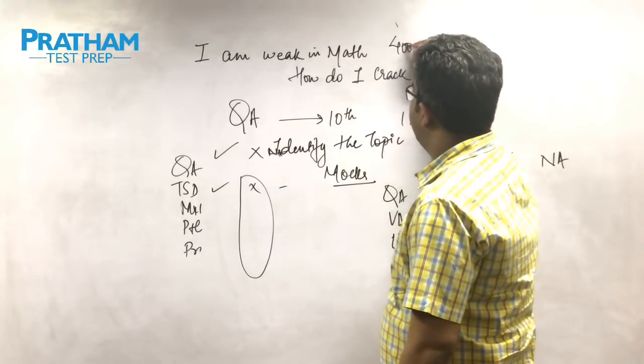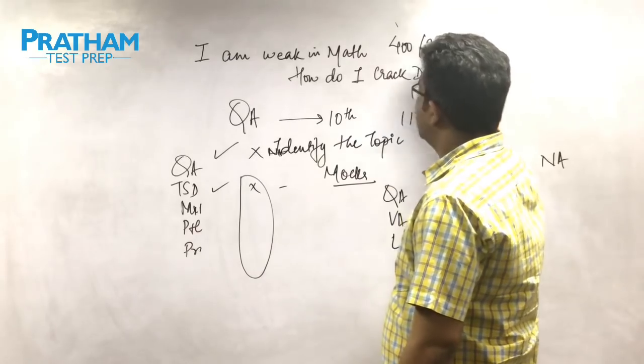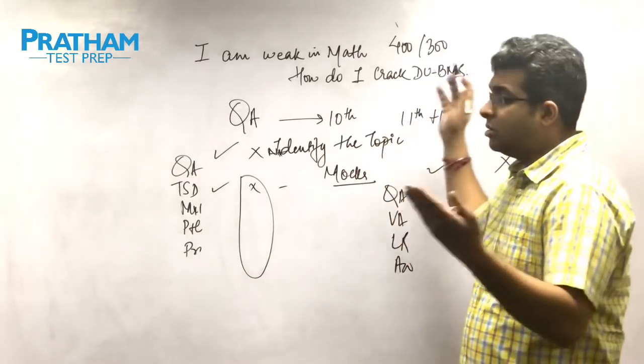So if it's a 400 mark question paper, a good score to get should be around 300 or 275 to 300.